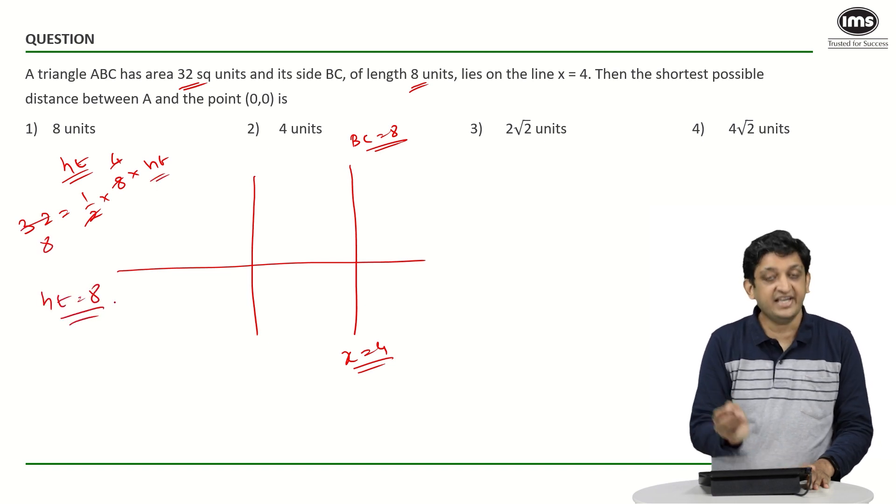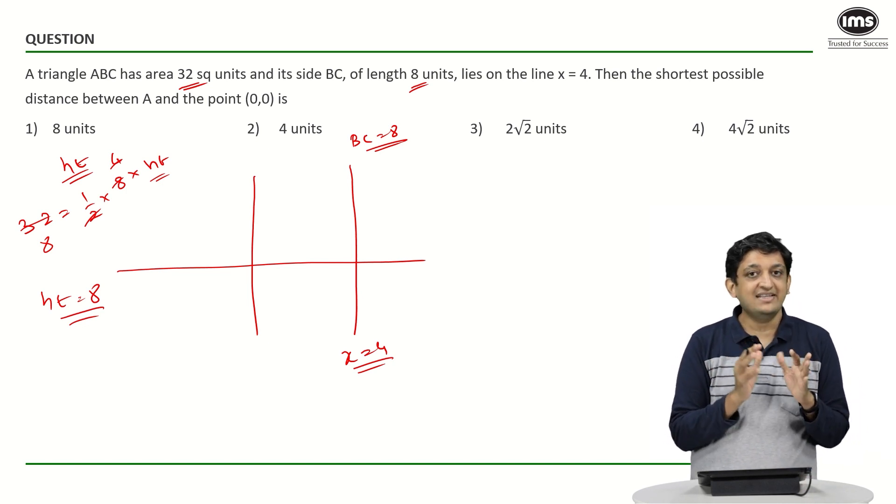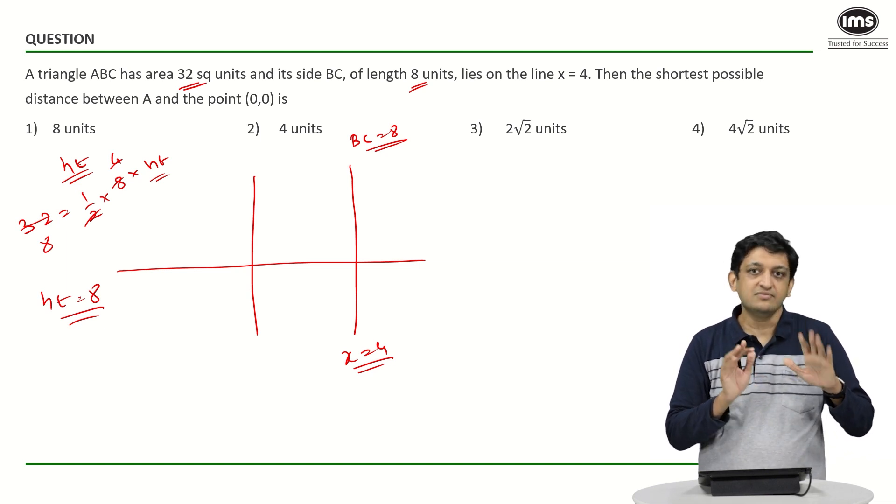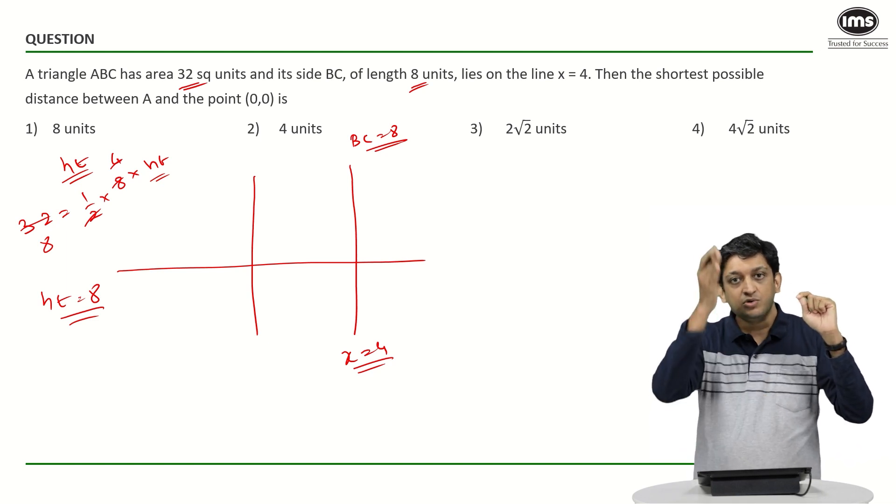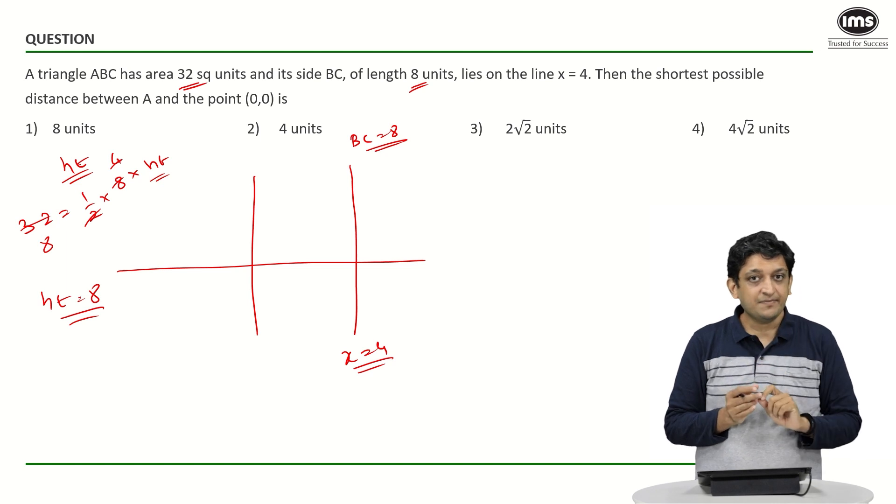We're going to get that the height of this particular triangle will be 8 units. Now, what exactly is the height? The height is nothing but the perpendicular distance or the length of the perpendicular that has been dropped from A to the line BC.